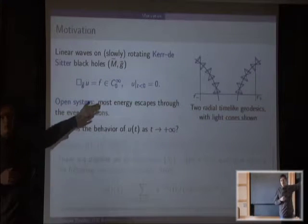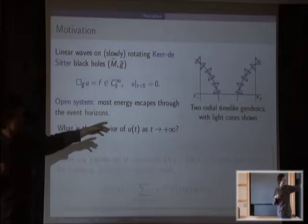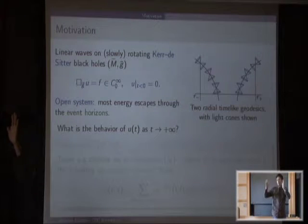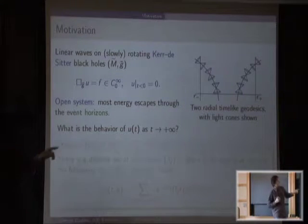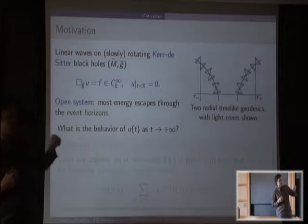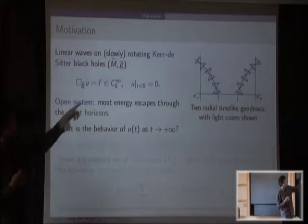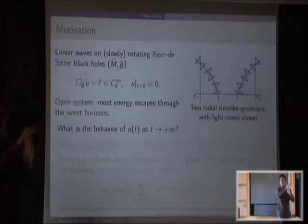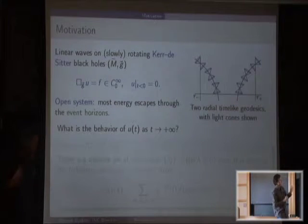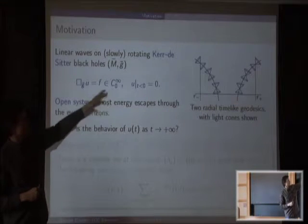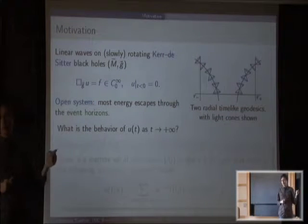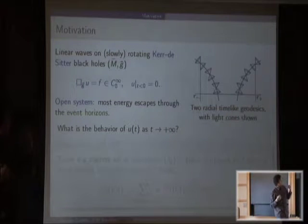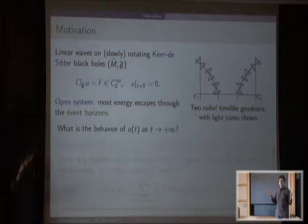It's drawn on the right. You have some angular directions — two-spheres — then the time direction going vertical, and the radial direction. Your metric is wedged between two fixed radii. The surfaces R = R_+ and R = R_- are called the event horizons. With respect to the metric, light cones are tangent to the event horizon, so if you go out of the event horizon, you never come back. This causal structure makes it possible to study the initial value problem for the wave equation between the two event horizons, since you have no information coming from inside the black hole.